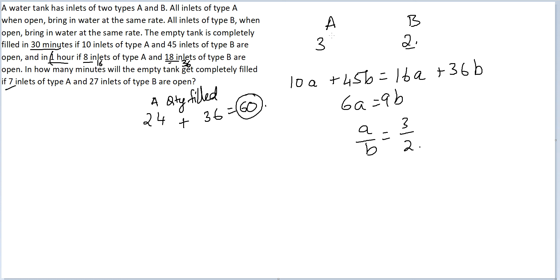So that size is 60 that you are dealing with. Now there are 7 inlets of type A. 7 inlets of type A would give you 21, and 27 inlets of type B, so you get 2 into 27, which is 54. So the water is currently getting filled up at the rate of 75. The size of the tank was 60. It is getting filled up at the rate of 75, so it should be 0.8 hours.